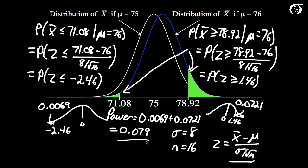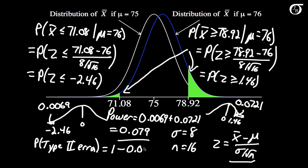That is the power in this setting. If instead we wanted the probability of a type 2 error in this scenario, that's just 1 minus the power: 1 minus 0.079, which works out to 0.921. That is our probability of a type 2 error.